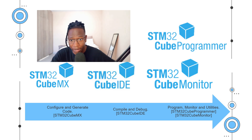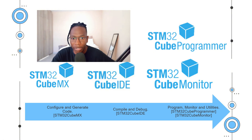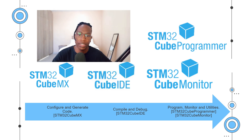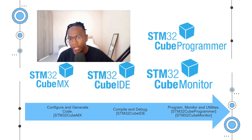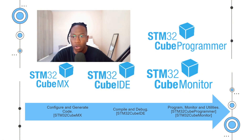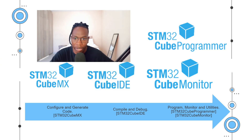Once the code is developed and tested, STM32CubeProgrammer is used to program the compiled binary file onto the STM32 microcontroller. This tool connects to the microcontroller via a USB cable, an external ST-Link that you can purchase, or other interfaces. This allows you to load and flash the binary file onto the microcontroller device itself, after which the application can then be run or further debugging can be performed.